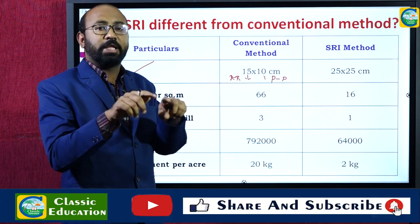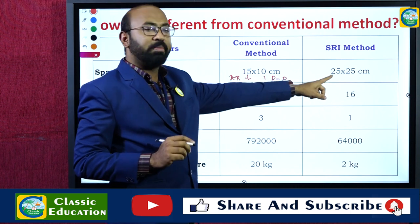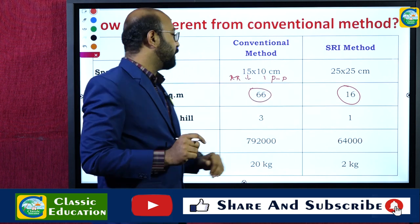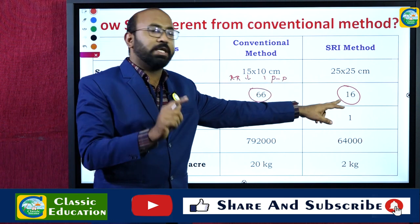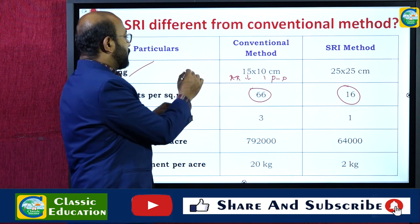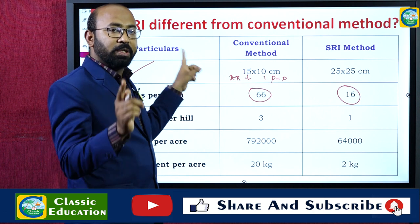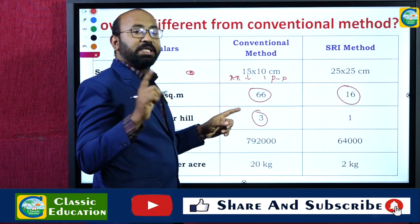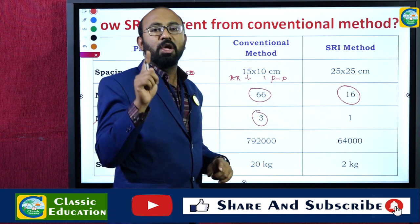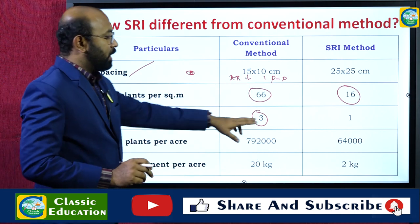Regarding the number of plants per square meter: in the conventional method there are 66 plants per square meter, but in SRI there are only 16 plants — a reduction of 50 plants per square meter, because spacing is more. For seedlings per hill: in the conventional method there are three seedlings from one seed, but in SRI there is only one plant per hill.